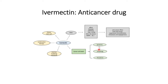Ivermectin can promote cell death through three different processes: apoptosis, autophagy — these two can communicate with each other mutually — and pyroptosis, which activates programmed cell death by introducing an immunogenic response.